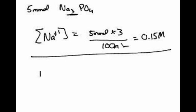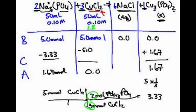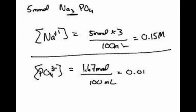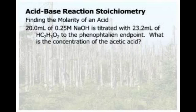Now if I want to find the concentration of the phosphate, this one's a little bit tricky because some of it was used up in making our precipitate. The phosphate — we had 1.67 millimoles left, so that's 1.67 millimoles divided by 100 milliliters, which is 0.0167 molar. And that's the answer to question 2. You're going to get good at these by doing them — do them, do them, do them, until you're done doing them.